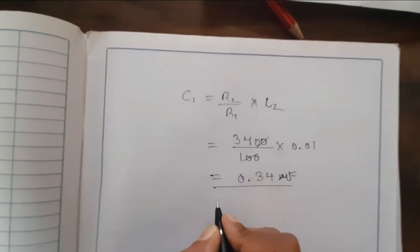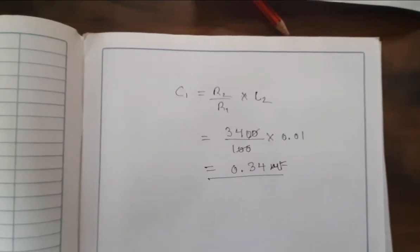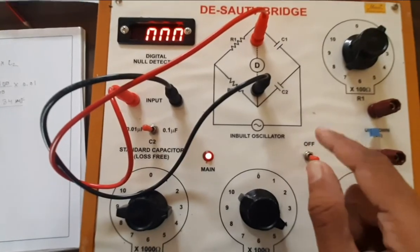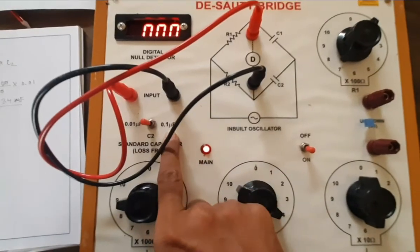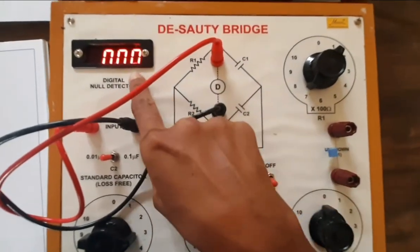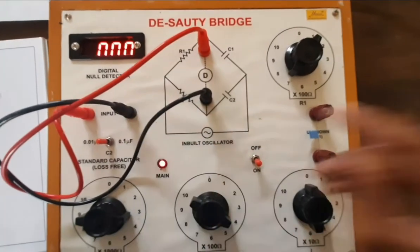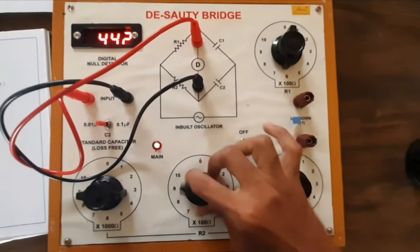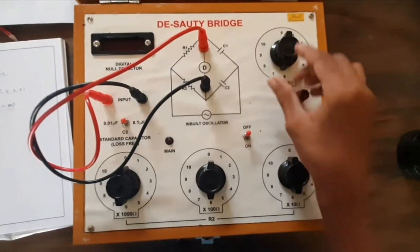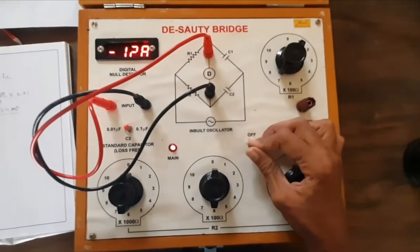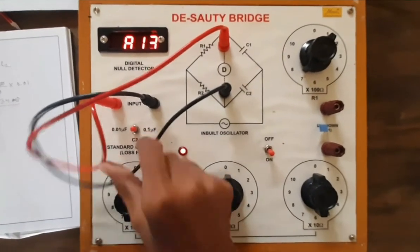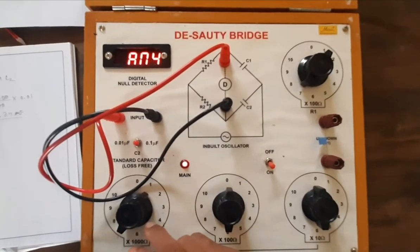This is the unknown capacitance C1 = 0.34 microfarad. We can also verify by keeping C2 at 0.1 microfarad — we should again get 0.34 microfarad. Bring all knobs back to 0, keep C2 at 0.1 microfarad, set R1 at 100 ohm, and switch on the device. The reading shows 8.16, so let us now apply R2.